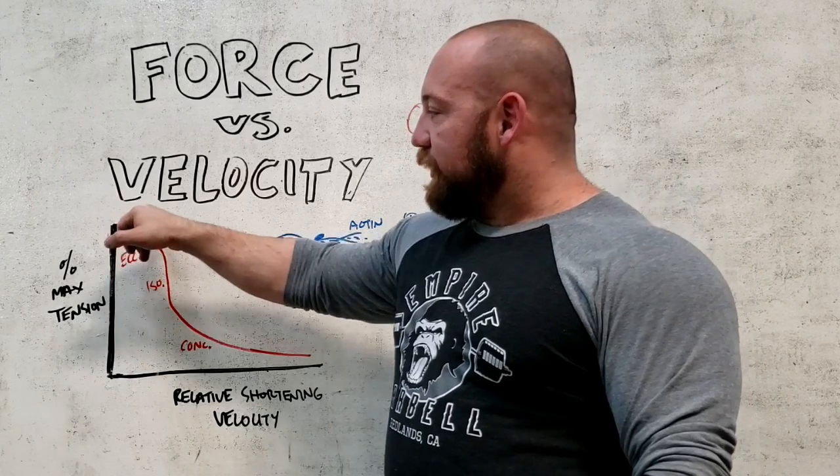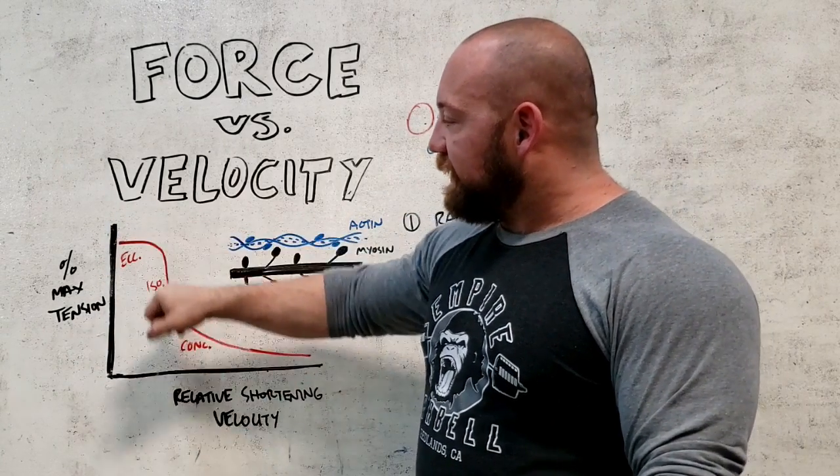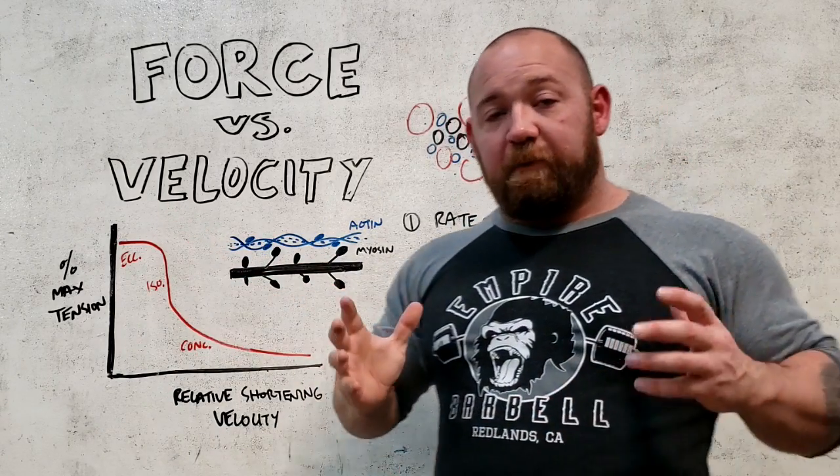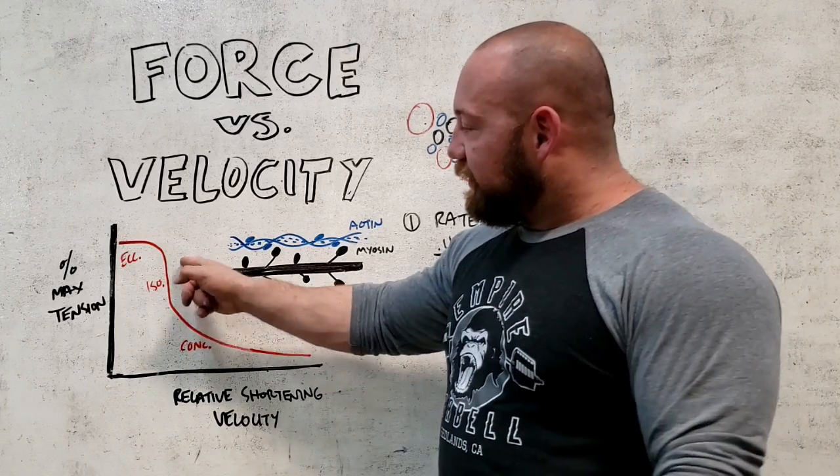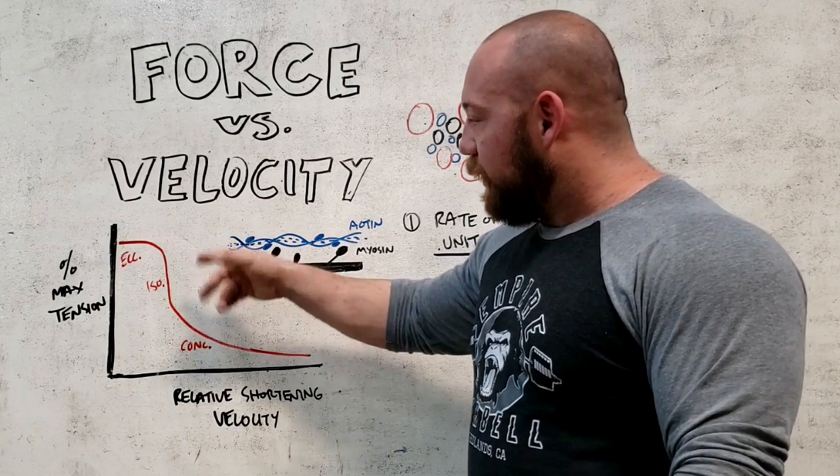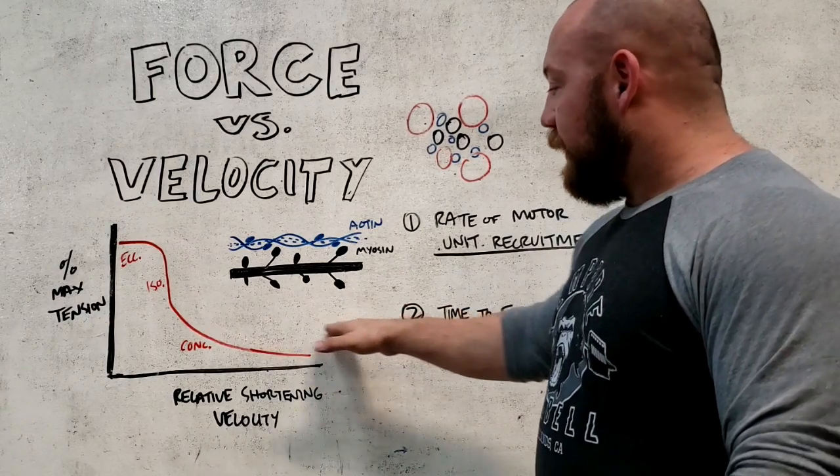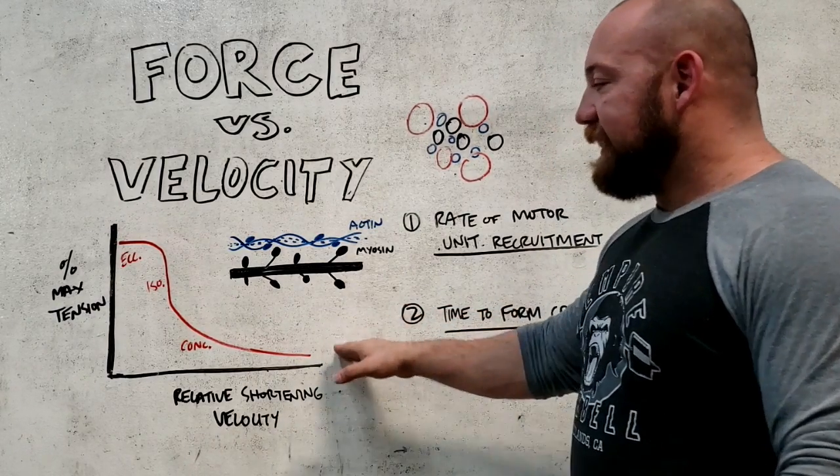Now, this curve - this is eccentric motion right here, lowering under control. We're very strong there. This is isometric. We're still very strong there. The second you move into concentric, where the muscle actually has to work to move something, you see this drop-off. This is slower velocity. This is lower relative shortening velocity, higher relative shortening velocity, to the point where you're doing truly explosive things, like throwing a fastball, jumping as high as you can.